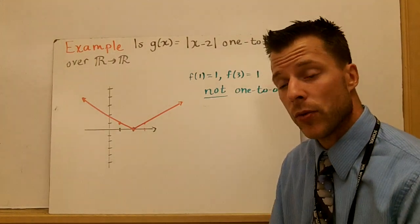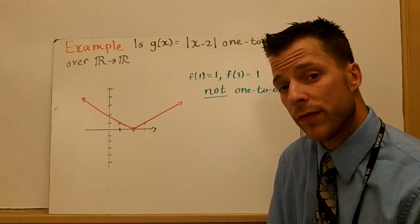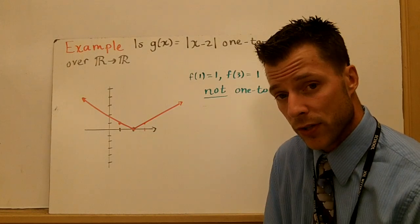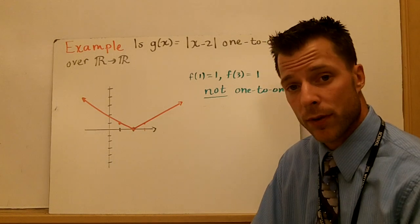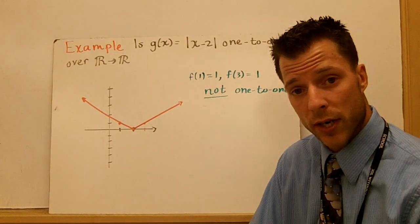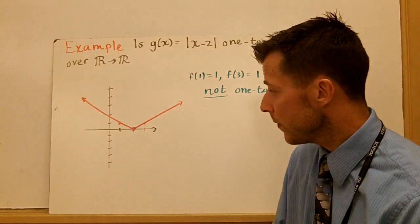So that's a quick definition or quick overview of what a one-to-one function is and an onto function. Remember, some couple things to close. Linear functions are both. We call that a bijection when you're one-to-one and onto.